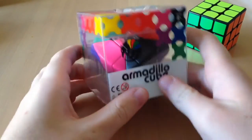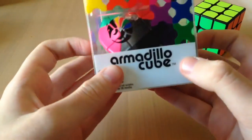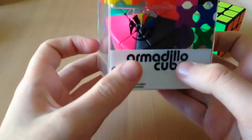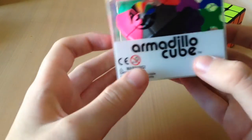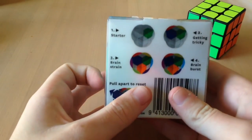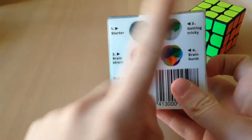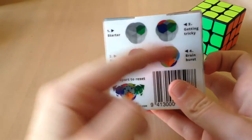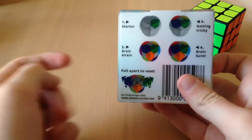And the cube is the most important thing. The packaging is very nice, it's in a clear kind of box. And the cube is kind of offset, so it's like on a stand. And you get a tutorial here. The starter, getting tricky, brain strain, brain burst, pull all apart to reset.